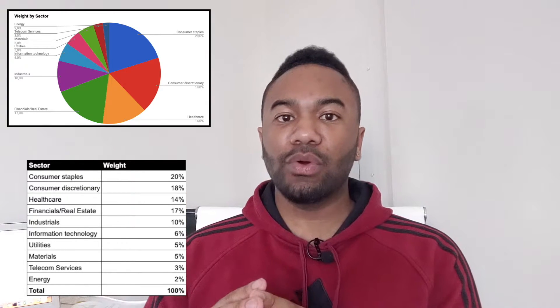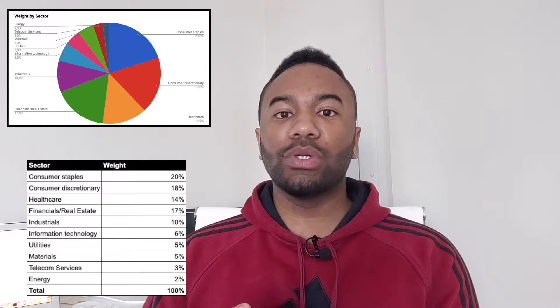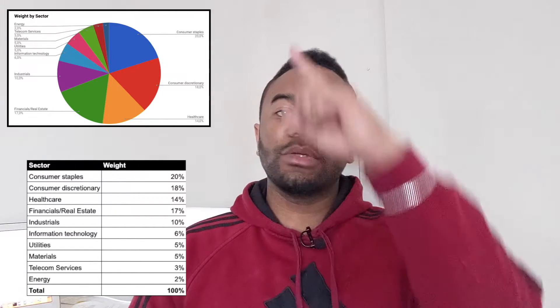If I had $10,000 to invest, 20% or $2,000 would go to companies in the consumer staples category. 18% or $1,800 would go to companies in consumer discretionary, and the list goes on. The reason I have it set up like this has everything to do with how volatile the companies are and how safe their dividend is even in a stock market crash.